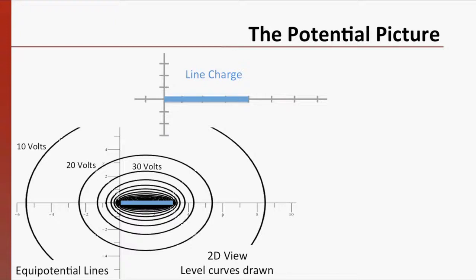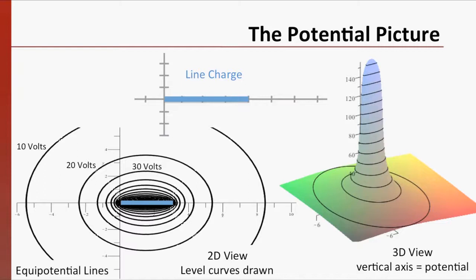If we plot the potential on the vertical axis, we end up with this mountain-like shape. We can imagine positive charges rolling down the mountain as they're pushed away from our line charge.